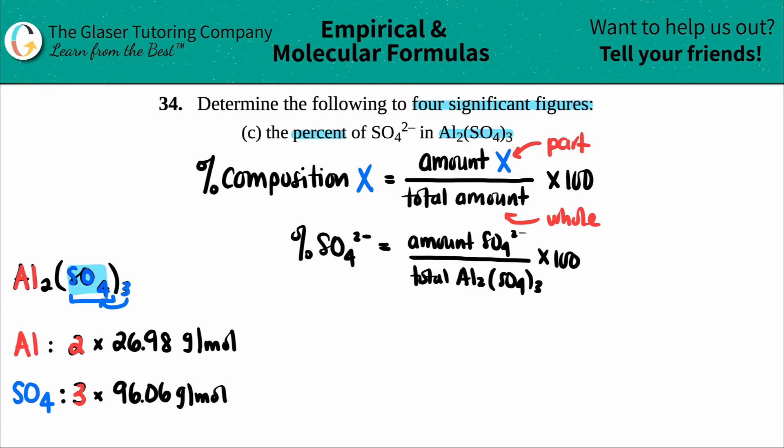Now I just multiply them out. Two times 26.98 is 53.96 grams per mole of aluminum. And three times 96.06 is 288.18, and that's the grams per mole of the SO₄.